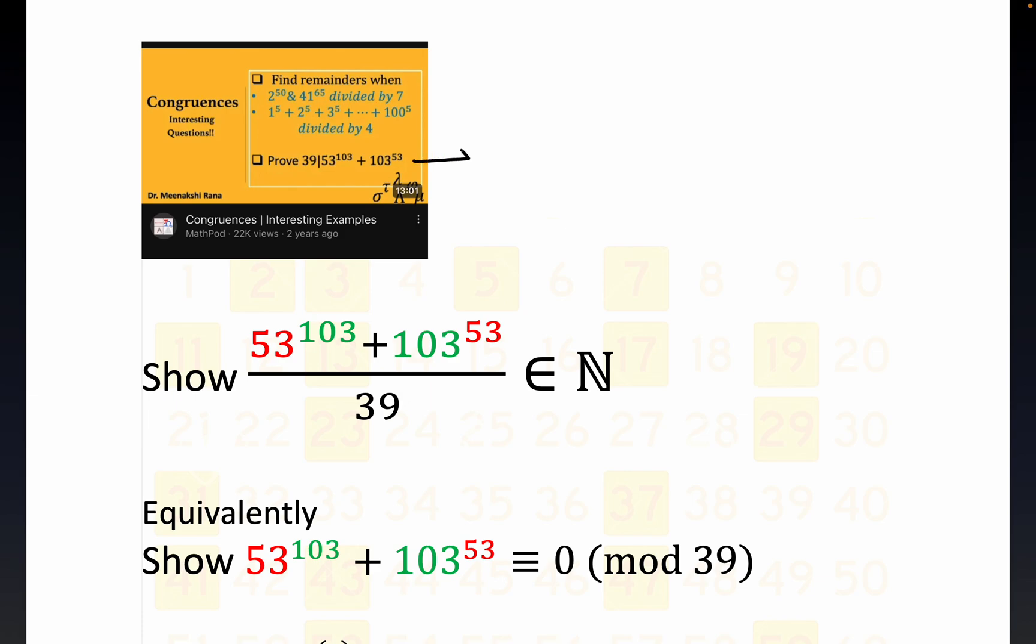I found this interesting divisibility problem. Let me recast this. This says 39 divides the sum of two large exponentials. Another way of saying that is 53 to the 103 summed with kind of its reverse, where the base and the exponent actually shift roles here.